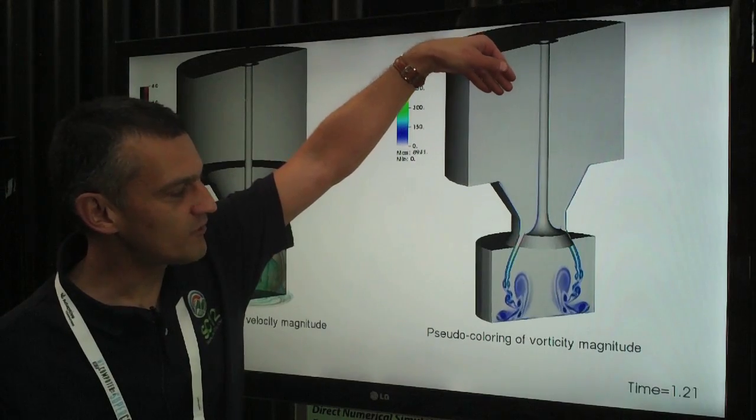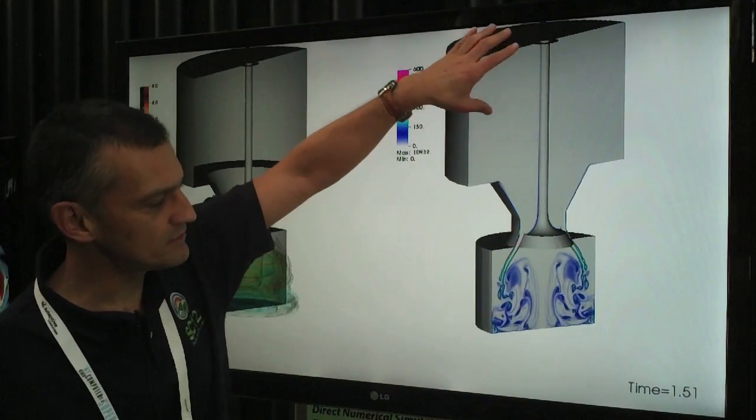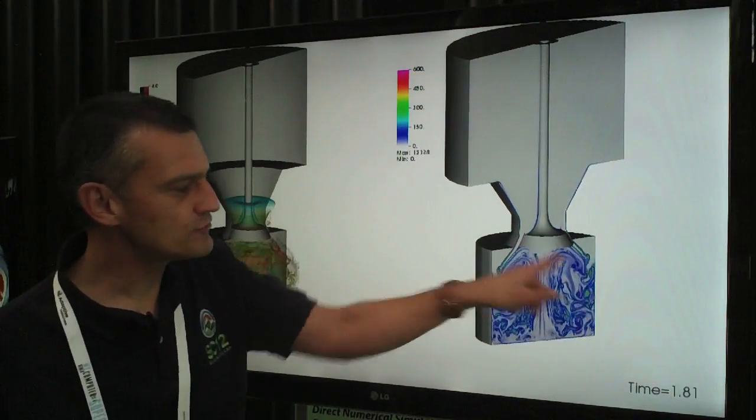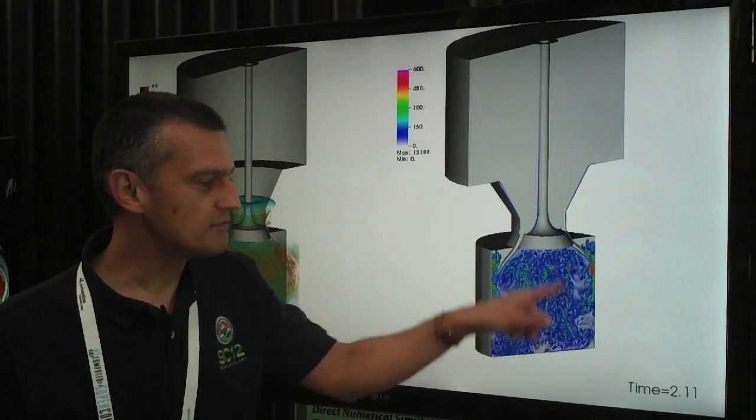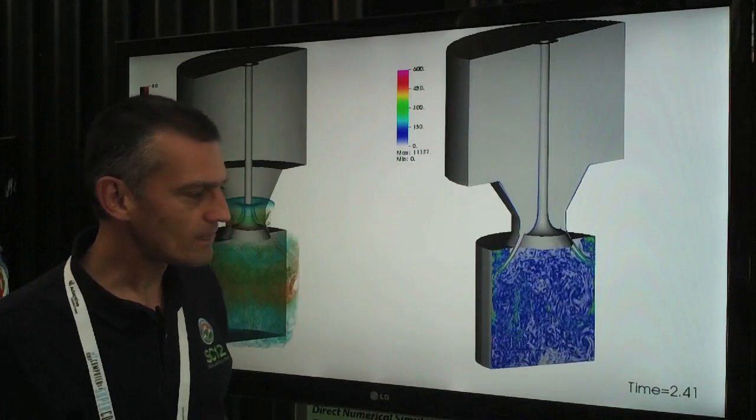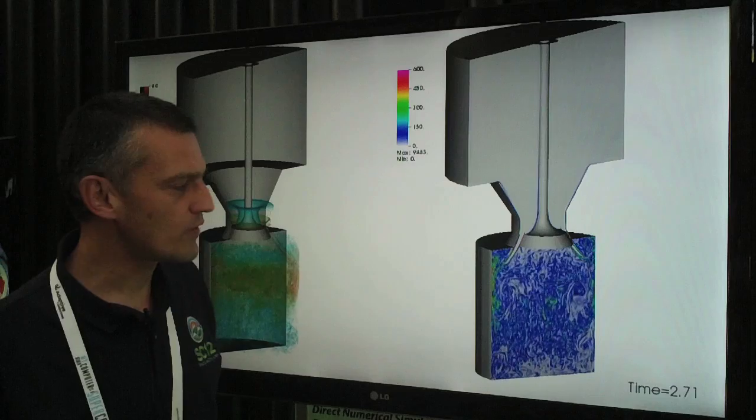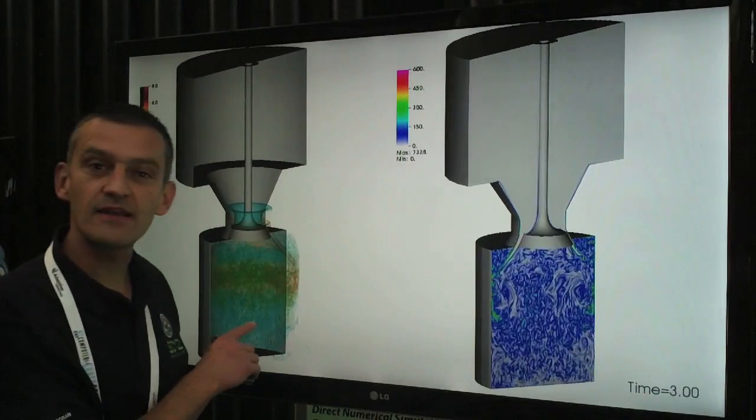So the air would be coming from the upper part of the cylinder here, and we are interested in the turbulence of this mixing region here, which we are showing in two different ways. So on the left side here,